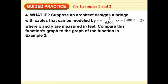And then, here in guided practice 4. What if? Suppose an architect designs a bridge with cables that can be modeled by this function. Slightly different than that Tacoma Narrows example. x and y are still measured in feet. Compare this function, this function's graph, to the graph of the function in example 2. So, what exactly is going to be different? And we have a couple things to look at. Where's the vertex? What is the axis of symmetry?